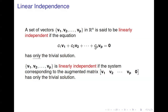Since this equation is equivalent to the system defined by an augmented matrix, we also say that the set is linearly independent if the system corresponding to the augmented matrix — where we put all the vectors in as the columns and augment on the zero vector — has only the trivial solution. So these two formulations are equivalent.